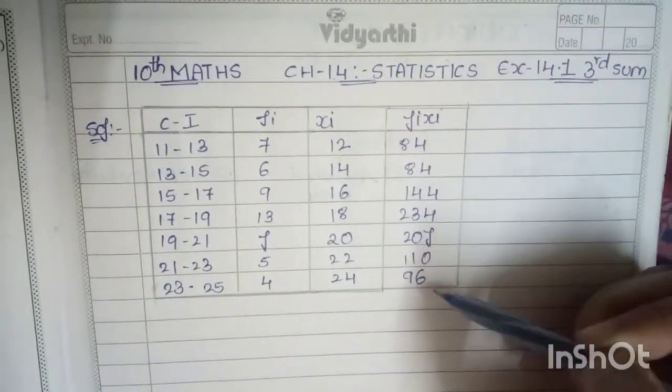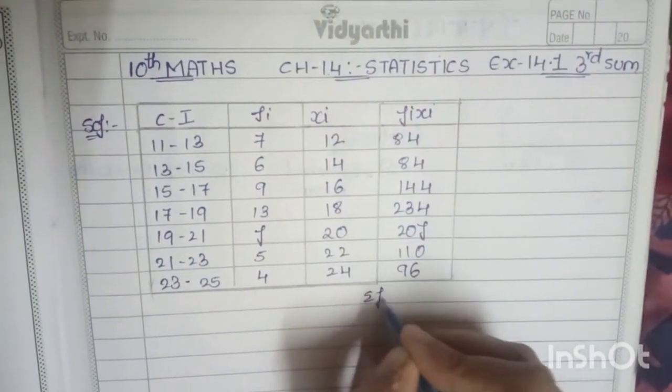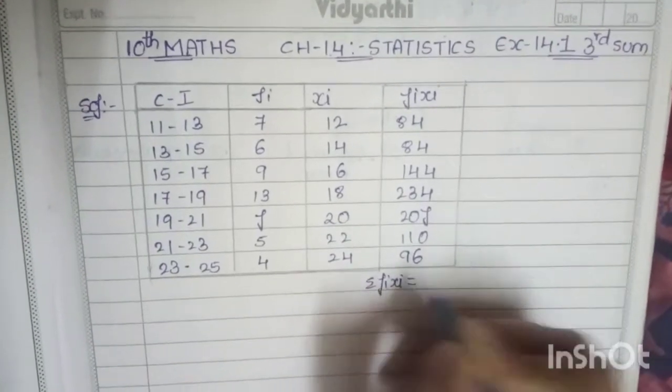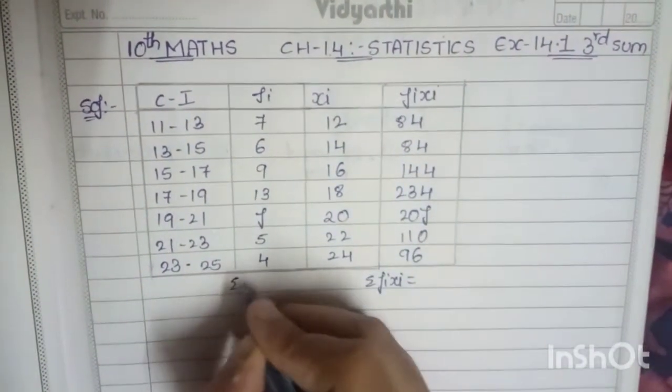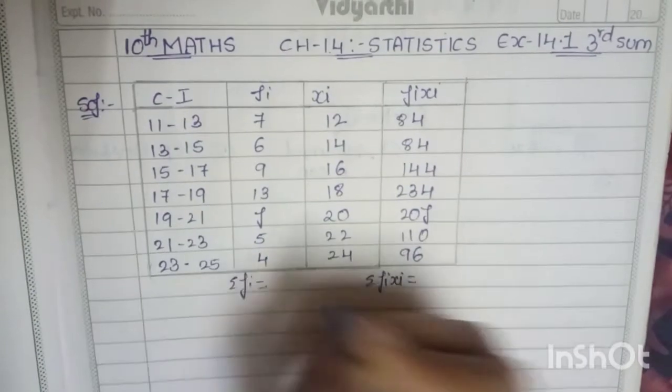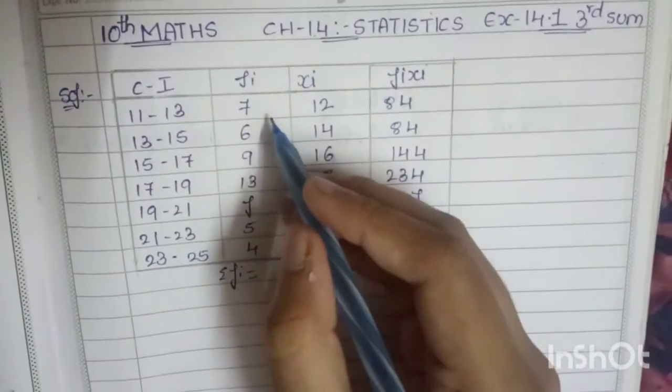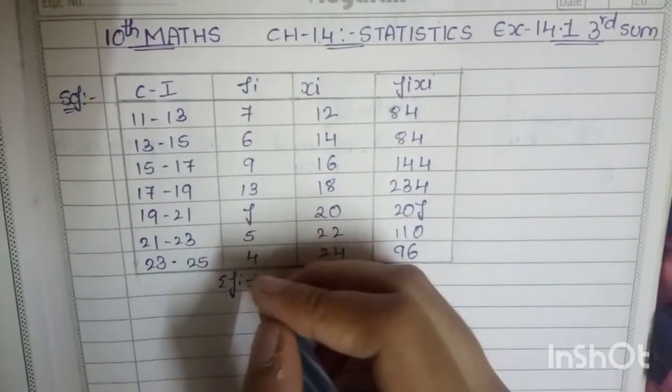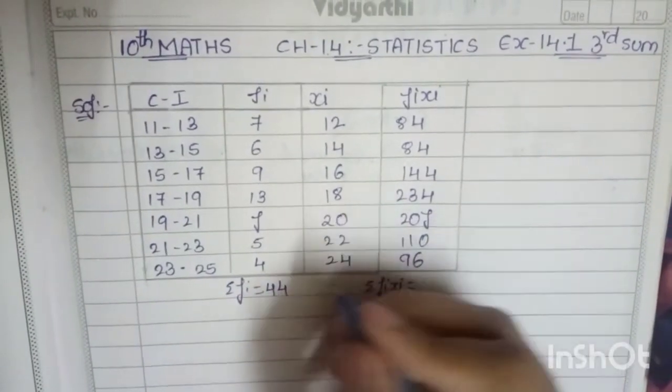Now we have to add all these values, which is sigma fi xi, and sigma fi - we have to add all the values of frequency. So except f, when you add all these values, you get the answer as 44, then you have to add plus f.